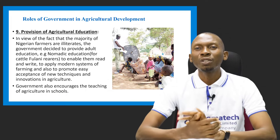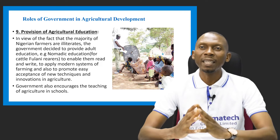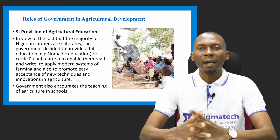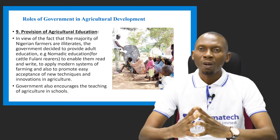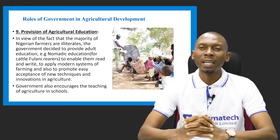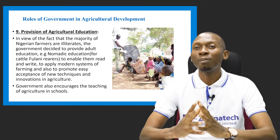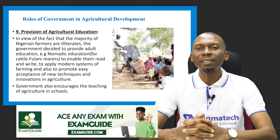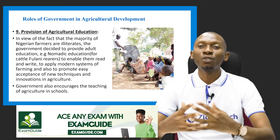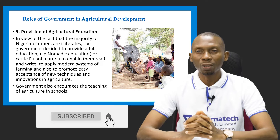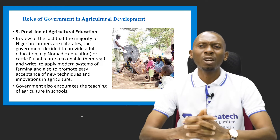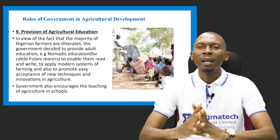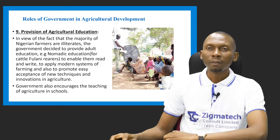Provision of agricultural education is another role that the government has played. Many Nigerian farmers are illiterates, so the government has stepped in to help solve this problem by providing adult education. An example is nomadic education for cattle Fulani herders, which enables them to read, write, and apply modern systems of farming and promote easy acceptance of new techniques and innovations in agriculture. The government has also helped to encourage the teaching of agriculture in schools.